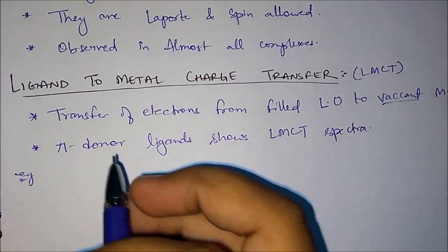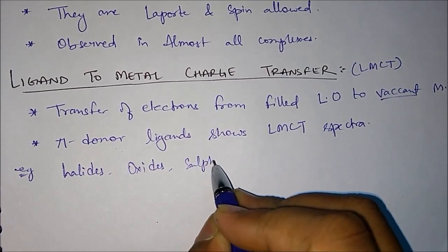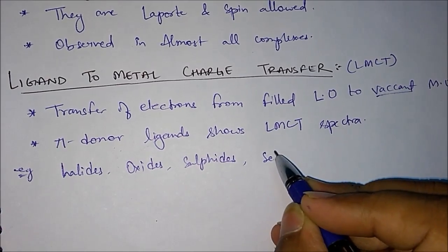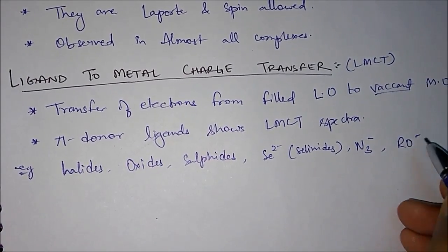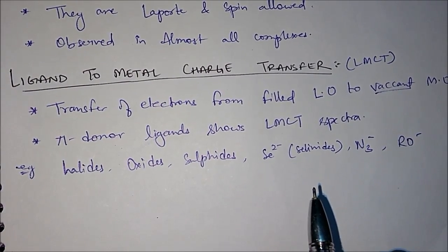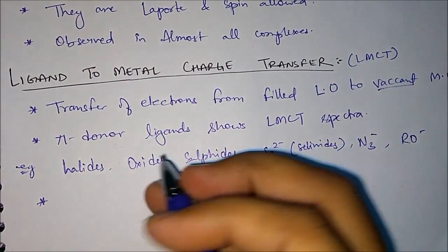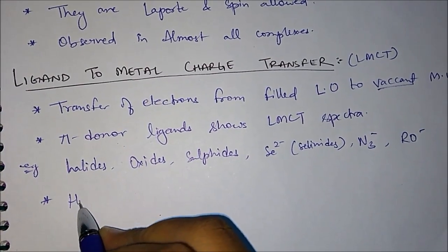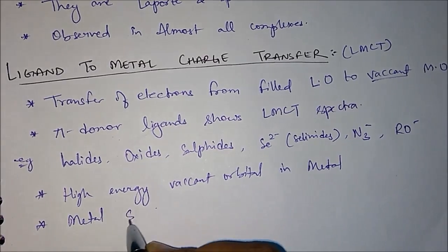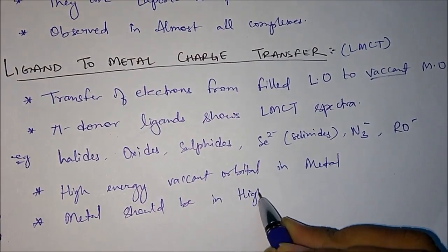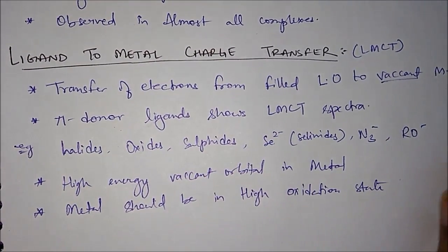Pi donor ligands include your halides, oxides, sulphides, selenides, N3 minus, and RO minus. These are a few examples of ligands which will show ligand to metal charge transfer. Now, what other conditions are required? The metal should have high energy vacant orbitals. Also, the metal should be in a high oxidation state so that the oxidation state of metal is very high in order for this ligand to metal charge transfer to occur.